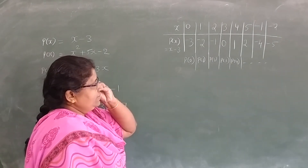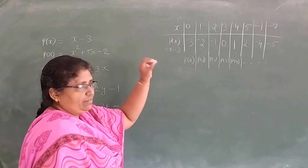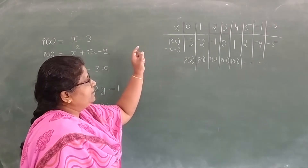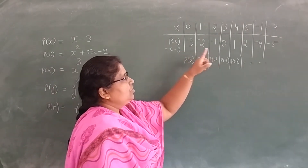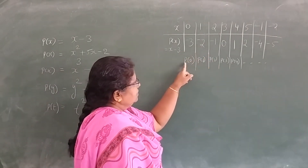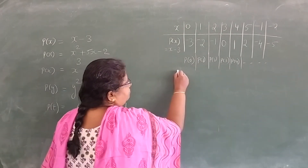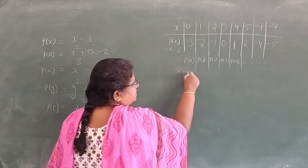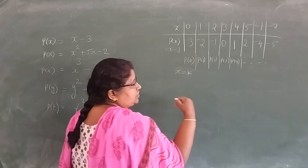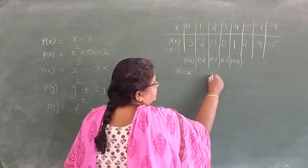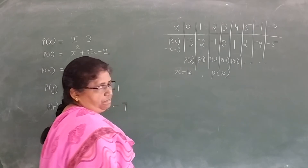So when we substitute some value for x, we get the corresponding value of the polynomial. If we put x equal to k, the answer we get is called p of k.